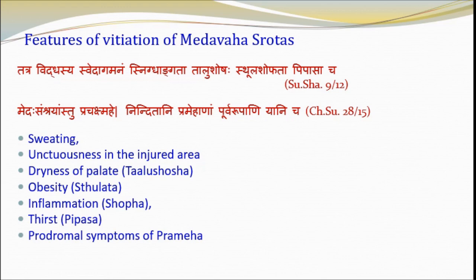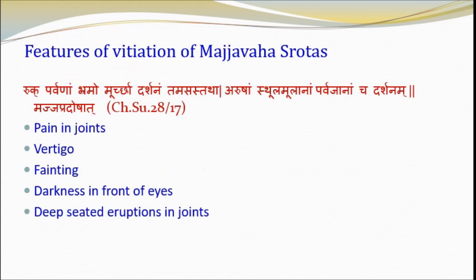Features of vitiation of Majjavahi Srotas include: Ruksha Parvanam — arthralgia; Brahma — giddiness; Murcha — fainting; Darshanam Tamastatha — appearance of darkness before the eyes; and Arusham Isthulmulanaam Parvajananam — appearance of deep or wide-rooted ulcers over the joint. Here, Arusha refers to ulcers or wound, and Isthulmulanaam is explained as Gambhira Parenahanam, meaning deep expanse or penetration.